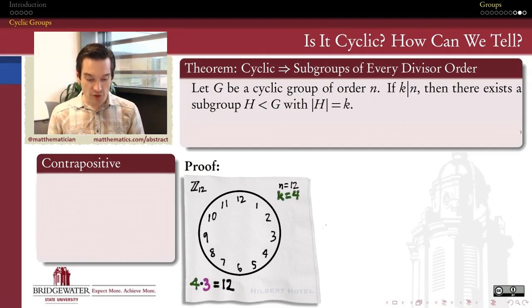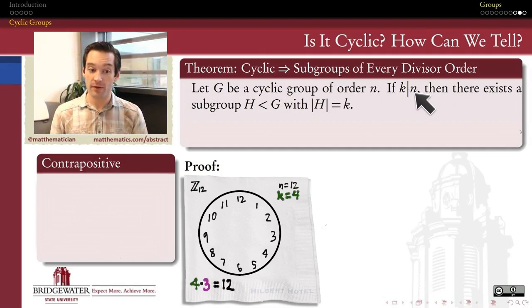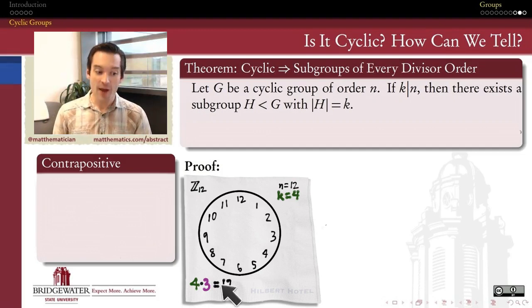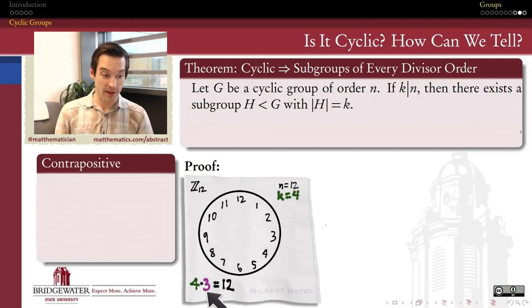The statement says, let's choose a divisor of the order of my group. If my group is order 12, let's say I choose 4 as one of my divisors. 4 is a divisor of 12, because 4 times something is equal to 12. That whole number, the cofactor, is 3. So, 4 times 3 is equal to 12. That's how I know that 4 divides 12.